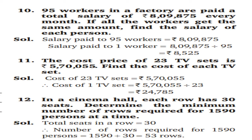Question number 11: the cost price of 23 TV sets is Rs. 5,70,055. Find the cost of each TV set. Similarly to question 10, cost of 1 TV set = 5,70,055 ÷ 23 = Rs. 24,785.